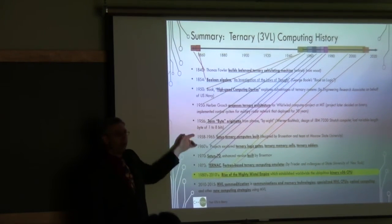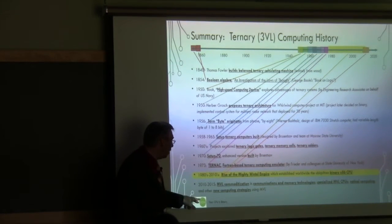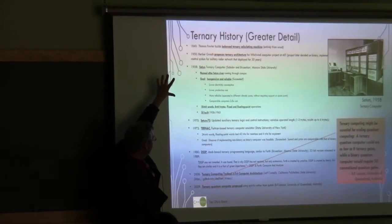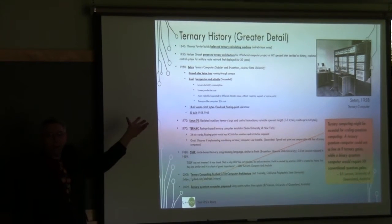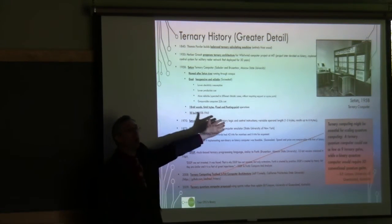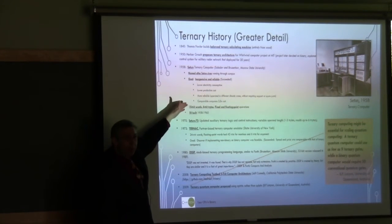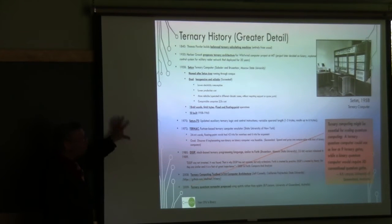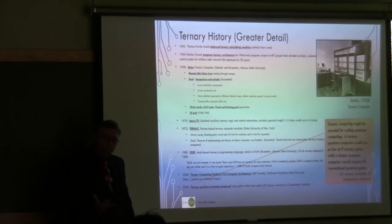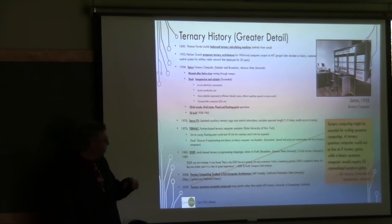A lot of this ternary work fell off the end because the commoditization consumer market went binary — Intel, PC, Mac. The commoditization is now being revisited. All the analyses of ternary versus binary basically concluded: yeah, you can do binary, you can do ternary, they both work. You could build a ternary PC CPU comparable to a binary CPU. There's no technical reason we're not doing it — we just all agreed on the local maxima.